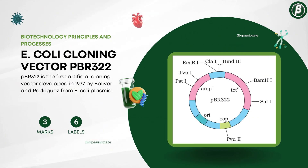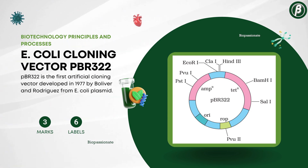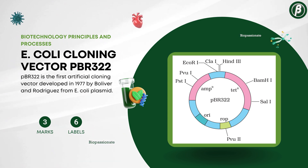Number 16: The Escherichia coli cloning vector PBR-322, for 3 marks with a minimum of 4 to 6 labels.